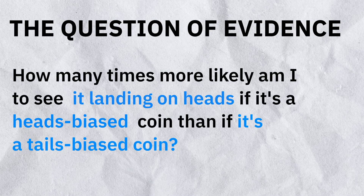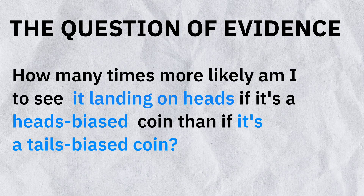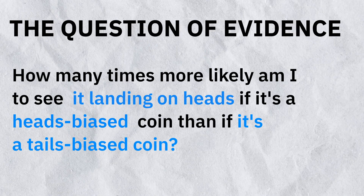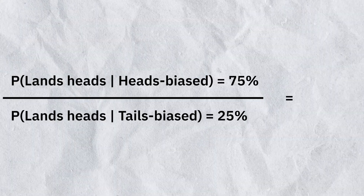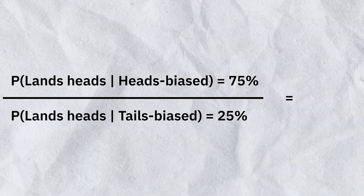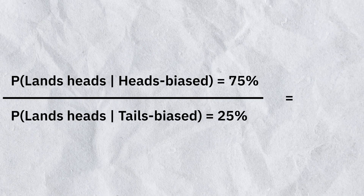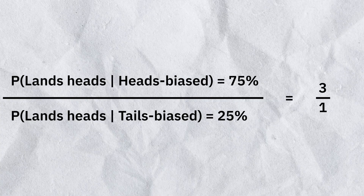But how strong is that evidence? We know how to evaluate the strength of evidence — we go to the question of evidence. In this case, that simply means asking: how many times more likely am I to see it landing on heads if it's a heads-biased coin than if it's a tails-biased coin? If it's a heads-biased coin, there's a 75% chance it lands on heads. If it's a tails-biased coin, there's a 25% chance it lands on heads. Therefore the ratio is 75 to 25, or 3 to 1.